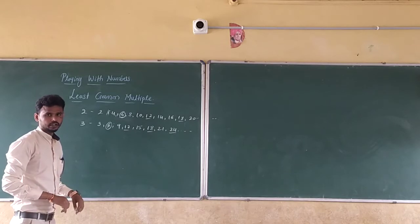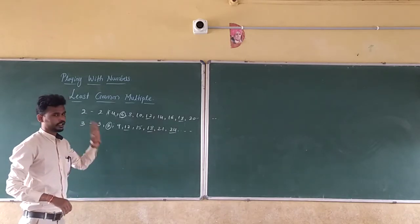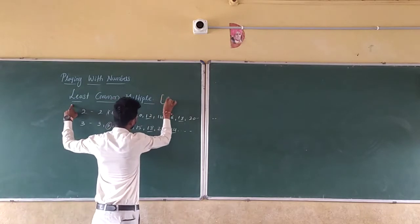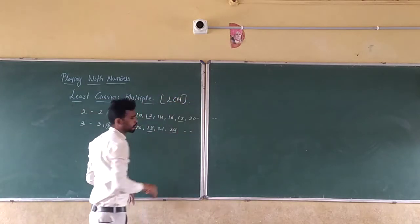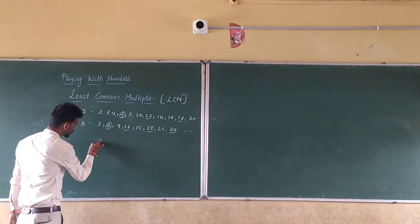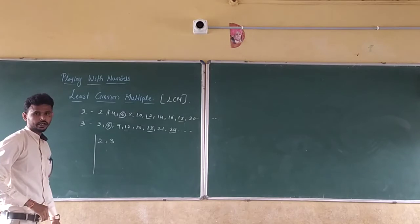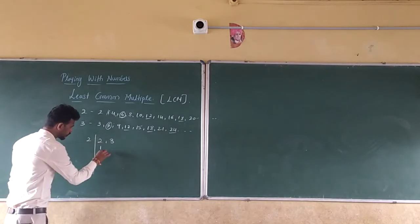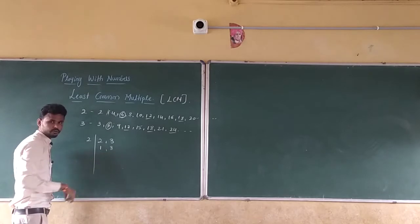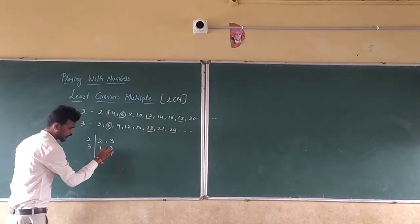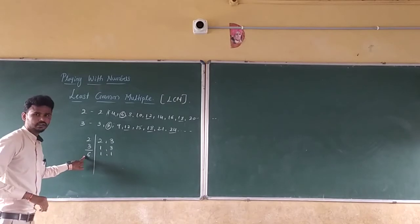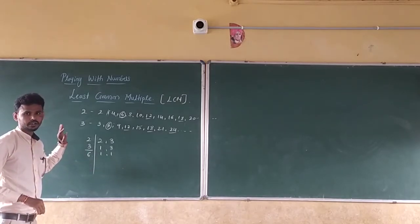But how do we need to find this? Listing like this will take a long time. So how we need to find the LCM? This Least Common Multiple we can write in short as LCM. So now how do we find the LCM of 2 and 3? Just divide or factorize 2 and 3. 2 divides 2, we get 1. 3 is not divisible by 2, so keep it. Next, 3 divides 3, we get 1. So now multiply 2 times 3, we get 6. So LCM of 2 and 3 is 6.